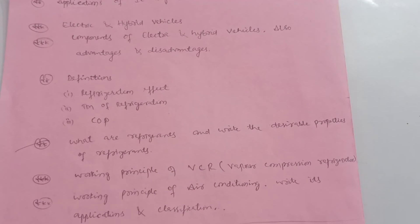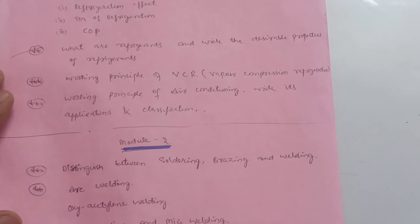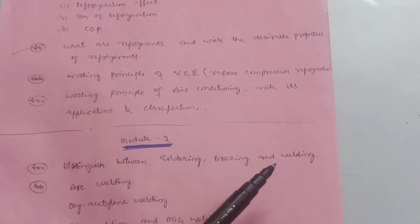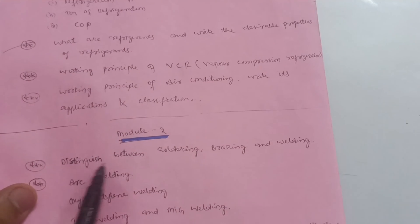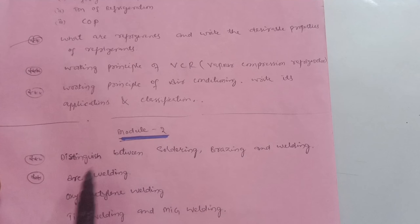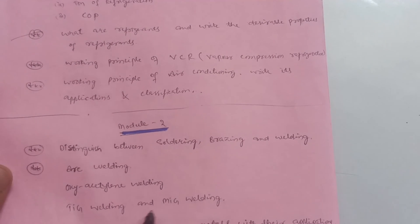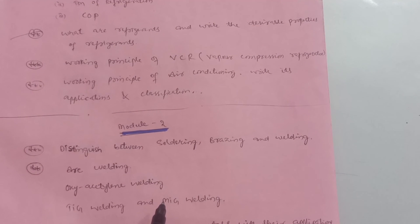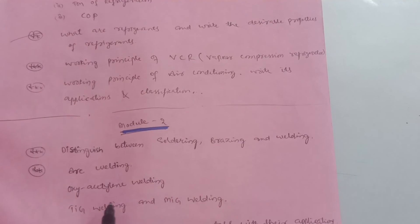This is enough to cover Module 3. Next is Module 2, which also has diagrammatic concepts. Topics include: distinguish between soldering, brazing, and welding; oxy-acetylene welding, TIG welding, and MIG welding — these are the most important ones. Focus only on diagrams. Watch animation videos for these welding processes so the concepts become crystal clear, and try to write it in your own words in the examination.